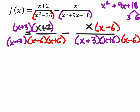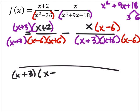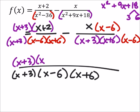Let's go ahead and rewrite this. We have the common denominator, which we want. It just has three binomials there, x plus 3, x minus 6, and x plus 6. In the numerator, I've got that x plus 3 times x plus 2, and I'm going to subtract this from x times x minus 6.